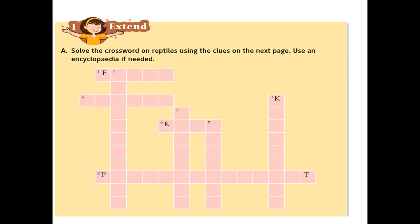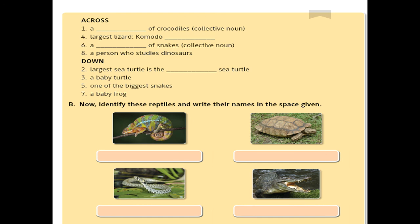Here is the 'I extend' part — solve the crossword on reptiles using the clues on the next page. Use an encyclopedia if needed. The clues include: a group of crocodiles, the largest lizard, a group of snakes, and a person who studies dinosaurs. You can google these or use an encyclopedia. Section B: identify the reptiles and write their names in the spaces given. Both section A and B will be given as homework. I hope you all enjoyed this session — thank you, children.